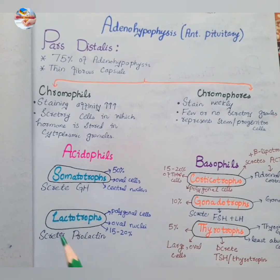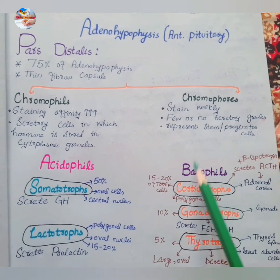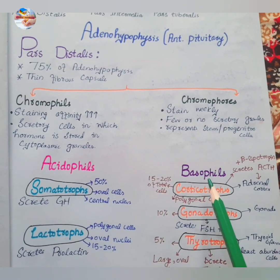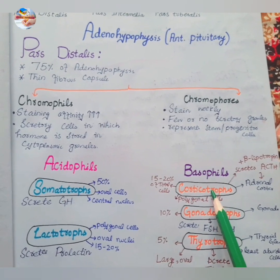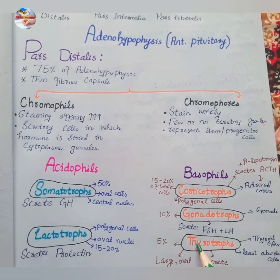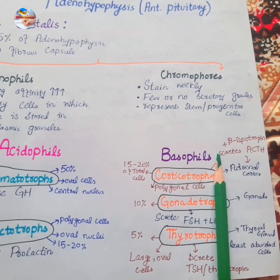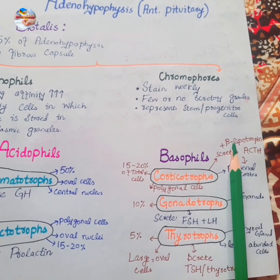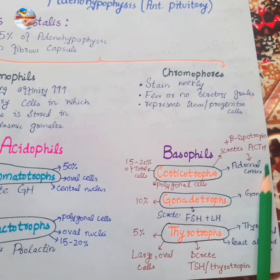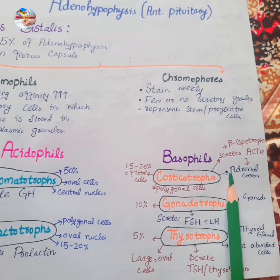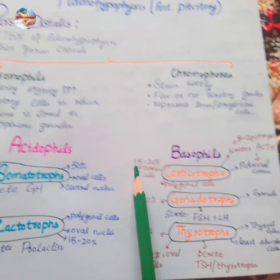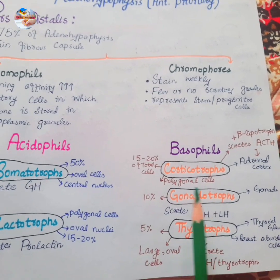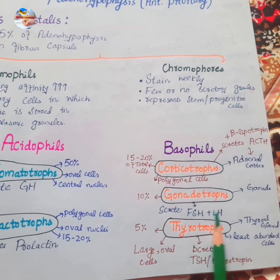Lactotrophs basically secrete prolactin. The second type of chromophils are the basophils, which are divided into three types: corticotrophs, gonadotrophs, and thyrotrophs. Corticotrophs secrete ACTH (adrenocorticotropic hormone) and beta-lipoprotein. ACTH acts on the adrenal cortex, which is its target organ. Corticotrophs form about 15 to 20% of the total cells in the pars distalis.